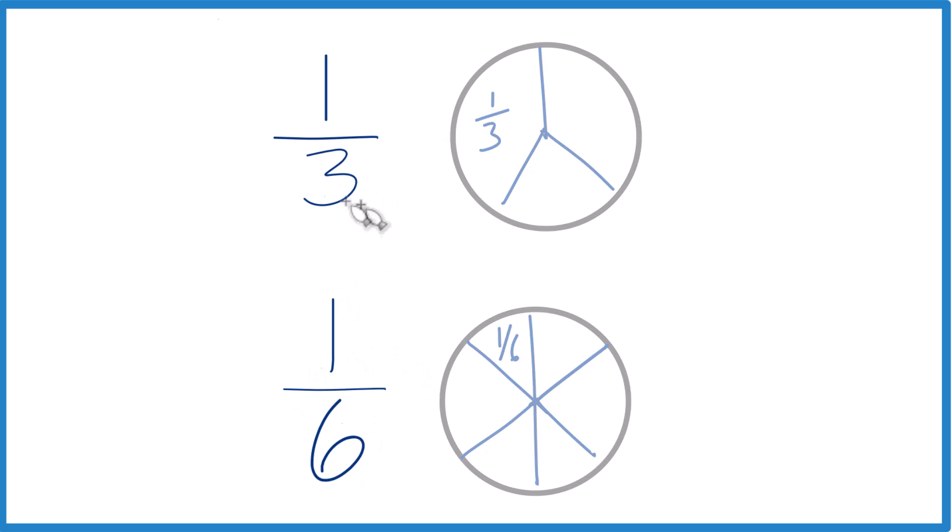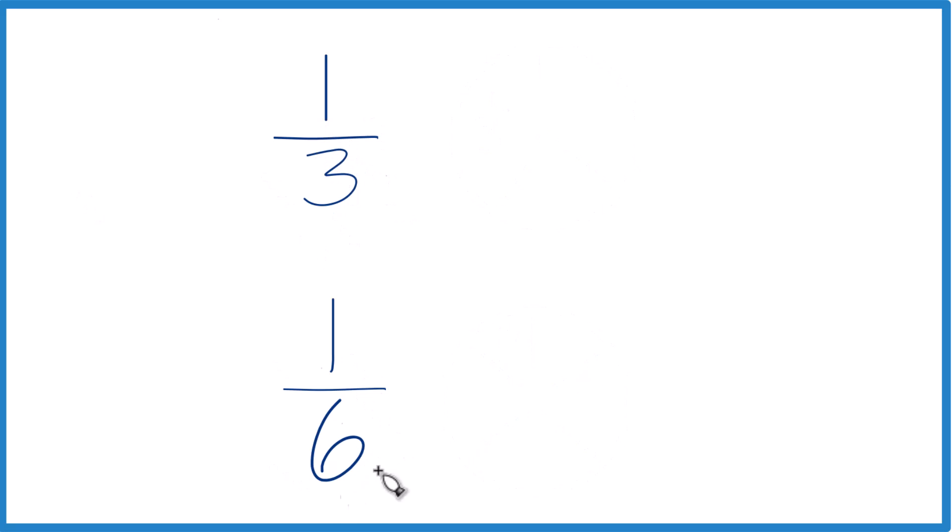Here's another way you can do it, though. You could find a common denominator here. So, it looks like if I had 3 times 2, that would equal 6 here. And I'll just keep this as 1 sixth.